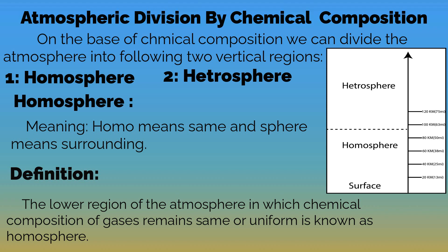Assalamu alaikum. Today we will briefly discuss the atmospheric division by chemical composition. On the basis of chemical composition, we can divide the atmosphere into two vertical regions: homosphere and heterosphere.